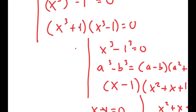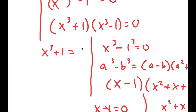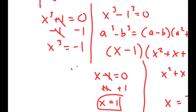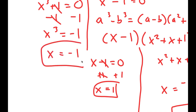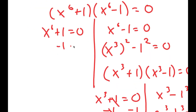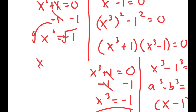We also have to solve the remaining equations. For x cubed plus 1 equals zero, subtracting 1 on both sides gives x cubed equals negative 1, meaning x equals negative 1. For x to the power of 6 plus 1 equals zero, subtracting 1 gives x to the power of 6 equals negative 1. Taking the sixth root, x equals the sixth root of negative 1, which is negative 1 to the power of one over 6.